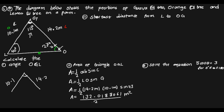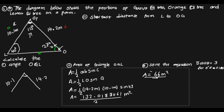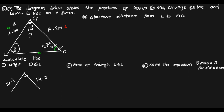Multiplying the numerator: 14.2 times 10.1 times sine 113 gives approximately 132.018 meters squared. Dividing by 2, our final answer is approximately 66 meters squared. So this is the area of the triangle. Now that we have the area, we can proceed to find the shortest distance.